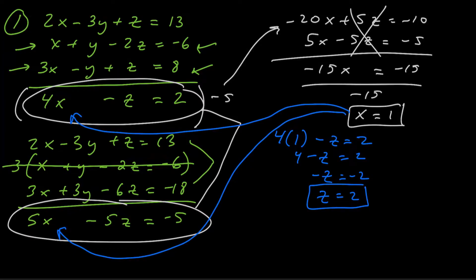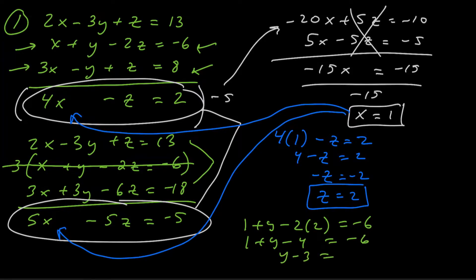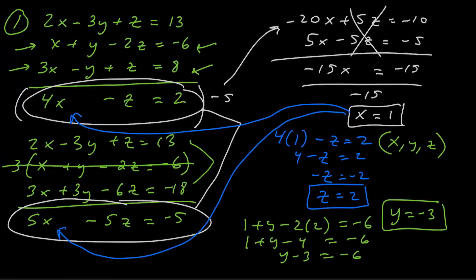Now we know x and z, so we need to solve for y. Going back to the original three-variable equations, I'll use the middle equation because it has just one y — easier to solve. Substituting x equals 1 and z equals 2: 1 plus y minus 2 times 2 equals negative 6, which gives 1 plus y minus 4 equals negative 6, so y minus 3 equals negative 6. Adding 3 to both sides, y equals negative 3. Writing the final answer as a triple in alphabetical order: x equals 1, y equals negative 3, z equals 2.